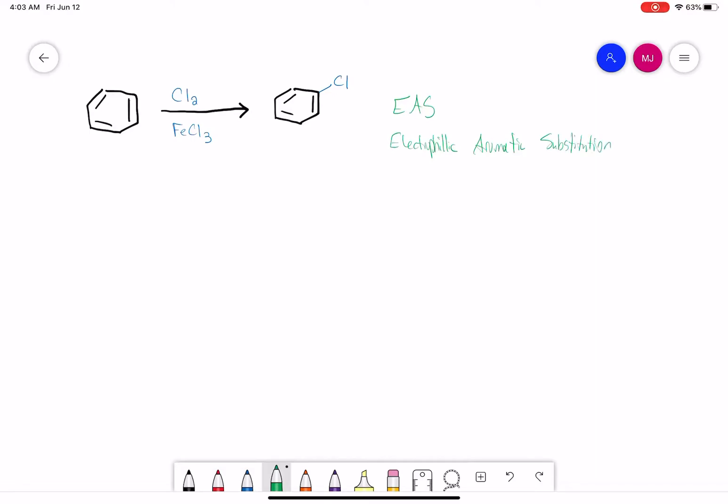So our first EAS reaction, we're going to be substituting a hydrogen. If we look at our benzene ring, we have six hydrogens around our benzene ring, and you are going to substitute any one of these hydrogens with a halogen.